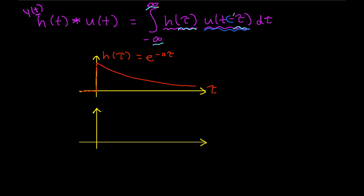U of t minus tau is a little bit more complicated. The fact that I have a minus tau here means that my u is going to be flipped about the point tau equals 0. And then the t and the minus tau end up shifting u of tau to the right by t. So for a chosen value of t, u of t minus tau makes the transition from 1 to 0 at this value of t.